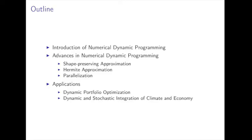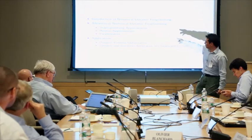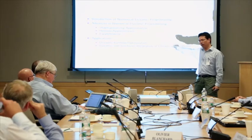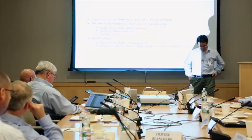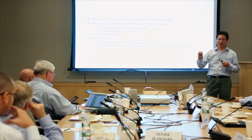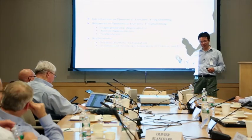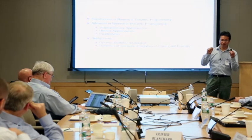I will introduce numerical dynamic programming very quickly, since many people have already discussed it. Then I will talk about three new advances. The first is about shape preservation. The second is to take care of the convergence of infinite horizon problems and the stability of numerical dynamic programming. After we have stability, we think about how to do things more efficiently using Hermite approximation, which uses Hermite information to get approximations fairly quickly. For high-dimensional problems, we can also use parallelization. Today my talk focuses on high-dimensional problems, assuming value functions are continuous and smooth.